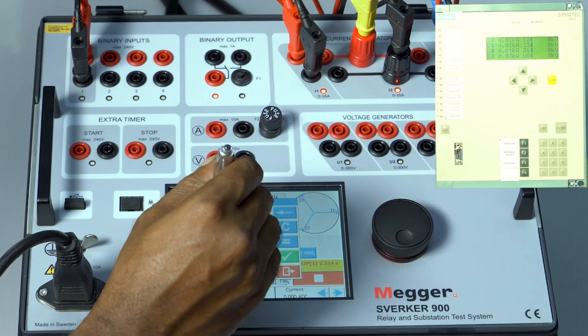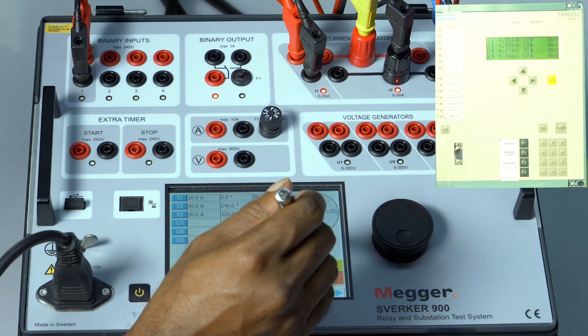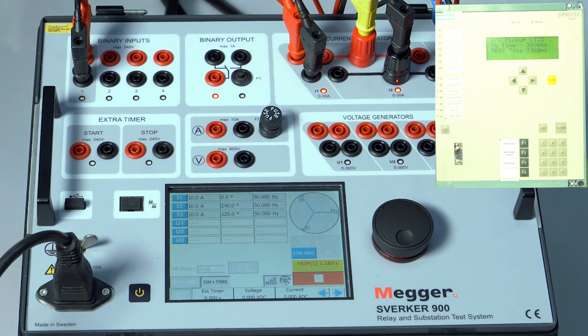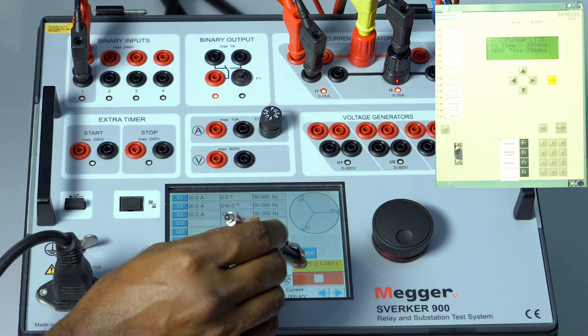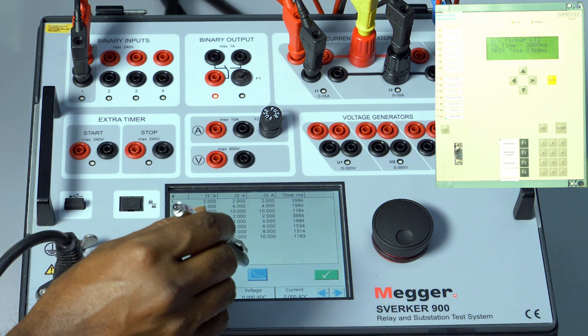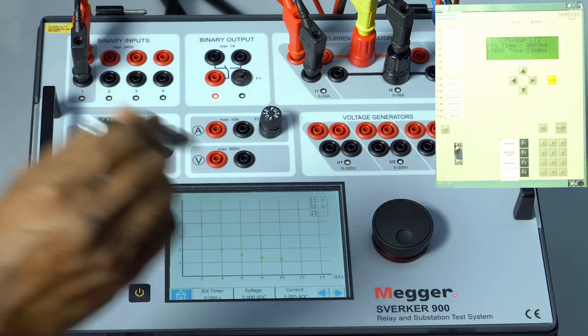Ten amps. So you can test as many points as you want, and after completion press the stop button. We get a table here. You can see the actual tripping time and the corresponding current. By clicking on this graph, you can get the IDMT characteristics.